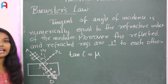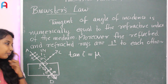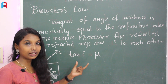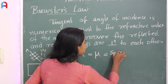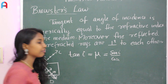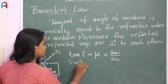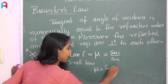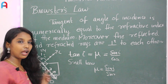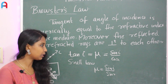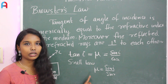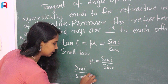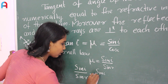Let's prove that the reflected ray and refracted ray are mutually perpendicular. Brewster's statement: tan i equals refractive index mu, and tan equals sin divided by cos. We also know Snell's law: mu equals sin i divided by sin r. So sin i by sin r equals sin i by cos i.